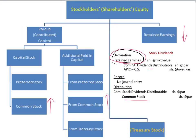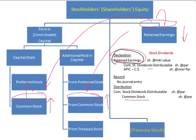Your additional paid in capital for common stock will also go up. So it looks like you take capital from the retained earnings bucket and put it into two buckets: one is common stock and the other is additional paid in capital from common stock. You took capital from retained earnings and put it into paid in capital or contributed capital. As a result, your total stockholders equity did not change at all.